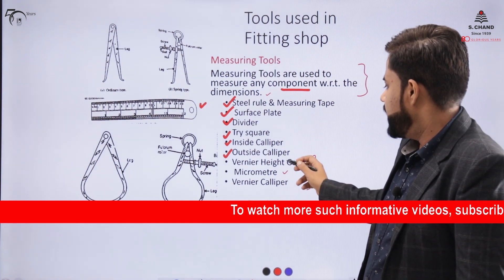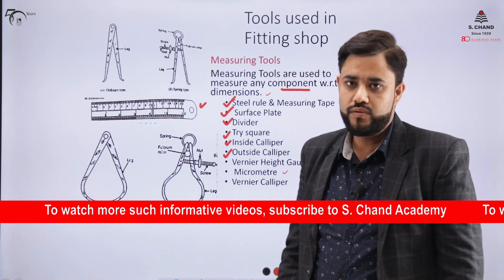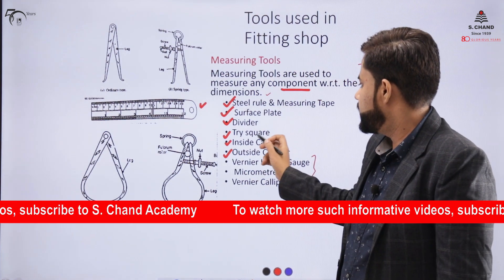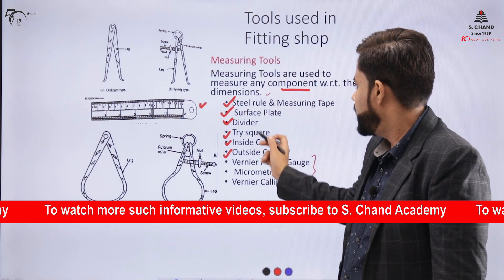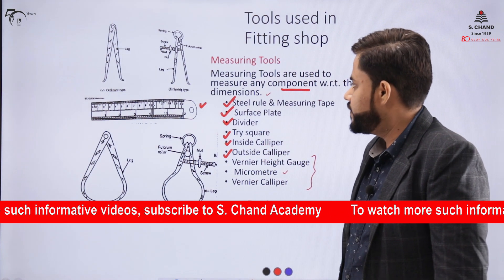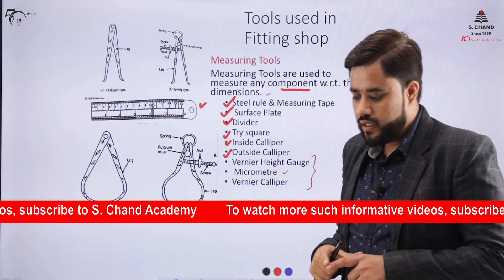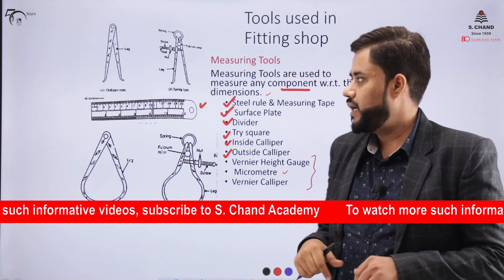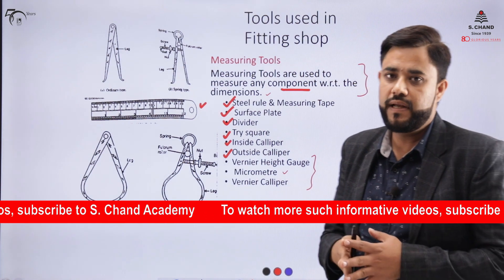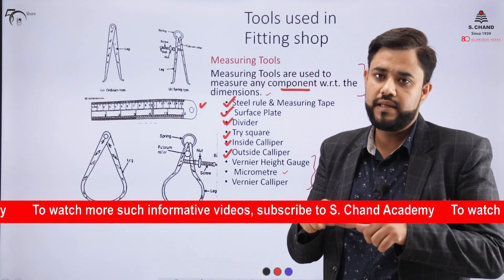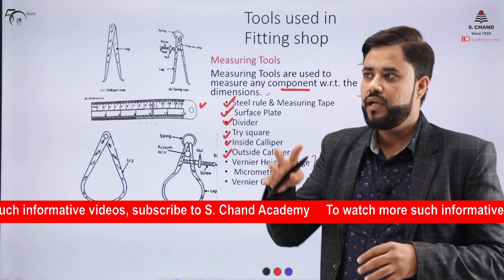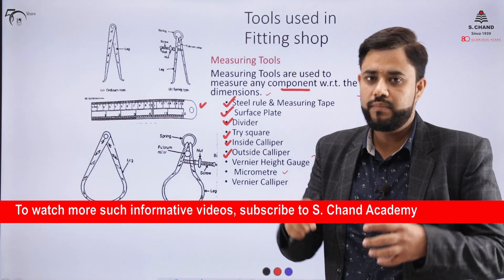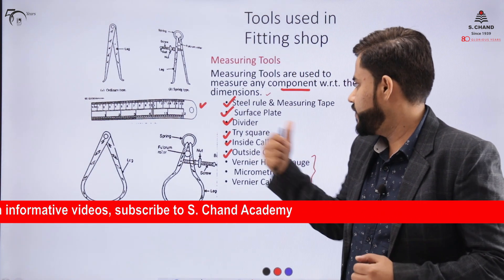Micrometer, vernier caliper, and height gauges are instruments specifically used to record precise dimensions. The surface plate is a cuboidal plate made up of cast iron with an excellent flat surface, so that markings or measurements can be done on objects by placing them on the surface plate.